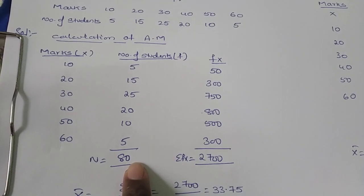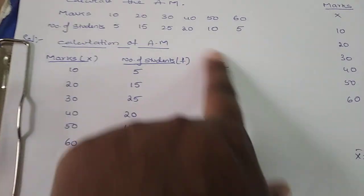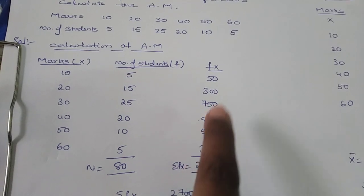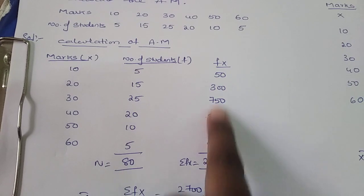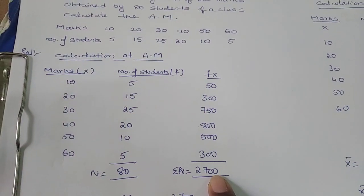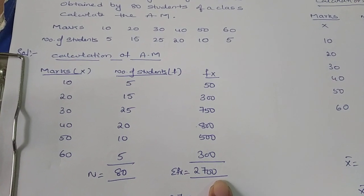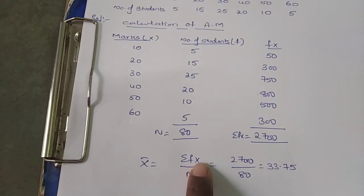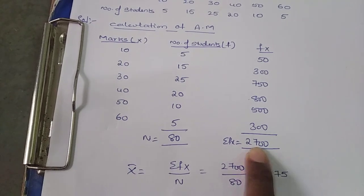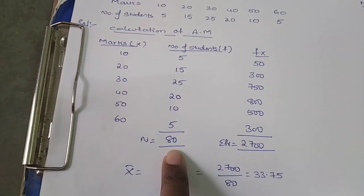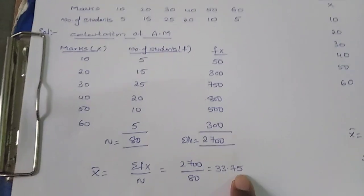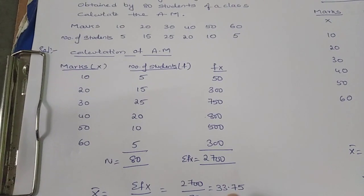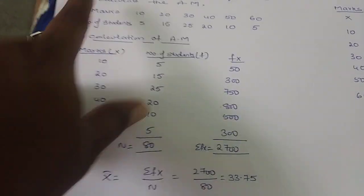Both x and f are given in the question; we only need to calculate fx. After totalling, σfx = 2700. Applying the formula: Mean = σfx / n = 2700 / 80 = 33.75. So the arithmetic mean in case of discrete series using the direct method is 33.75.